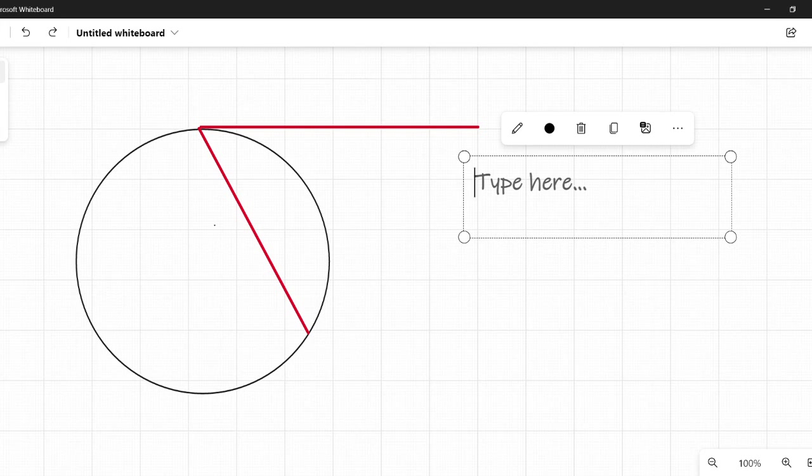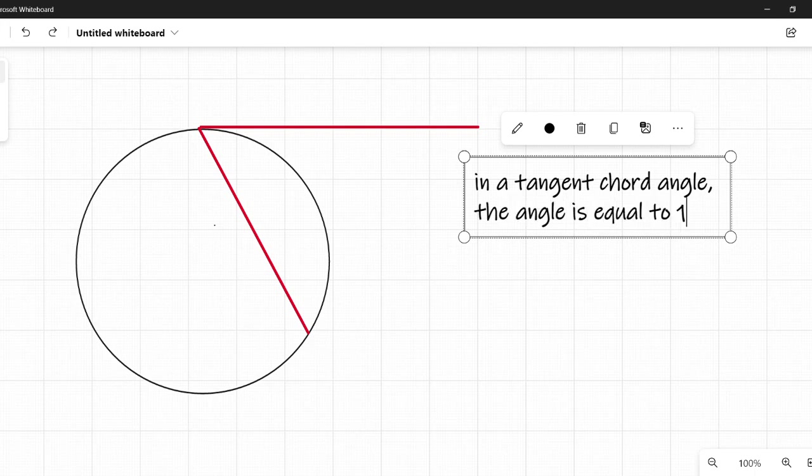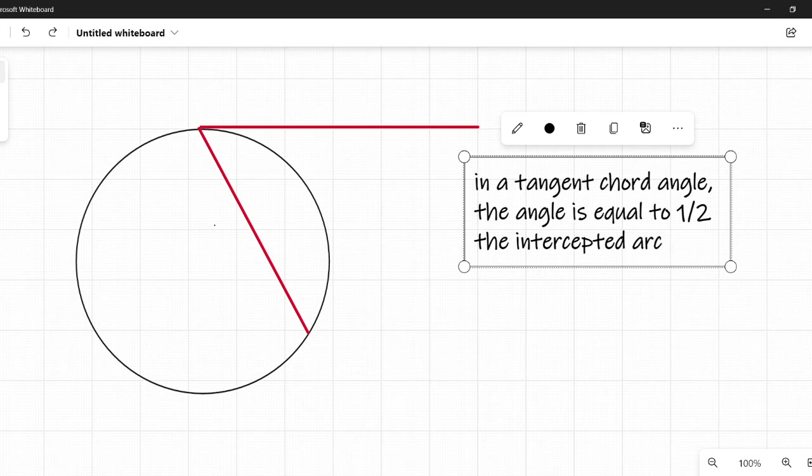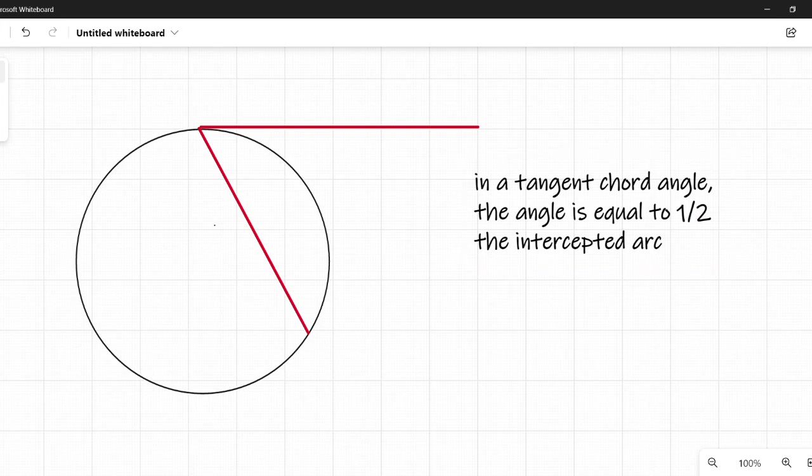Okay, in a tangent chord angle, the angle is equal to one half the intercepted arc. Okay, this is likely the definition you're going to see in your math book, that or something pretty close to it.